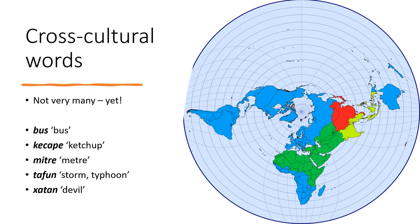The limits and boundaries between these cultures are not hard. They have been crossed many times in history and are being crossed all the time today. So there are already some cross-cultural words, and even global words. For example, the word for bus is known almost everywhere in the world. The word ketchup, which comes from South China, has spread all across the world. The word mitre, which means meter and comes from Greek, is known in almost every language in the world. The Chinese word taifang, in the form tufan, tafun, or typhoon, has spread all across the world. Finally, the Middle Eastern word shatan, which means devil, is known in almost all languages of the world that talk about religion.